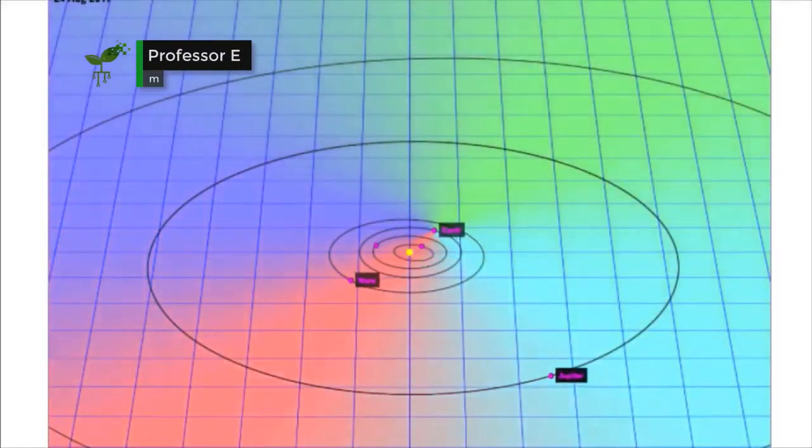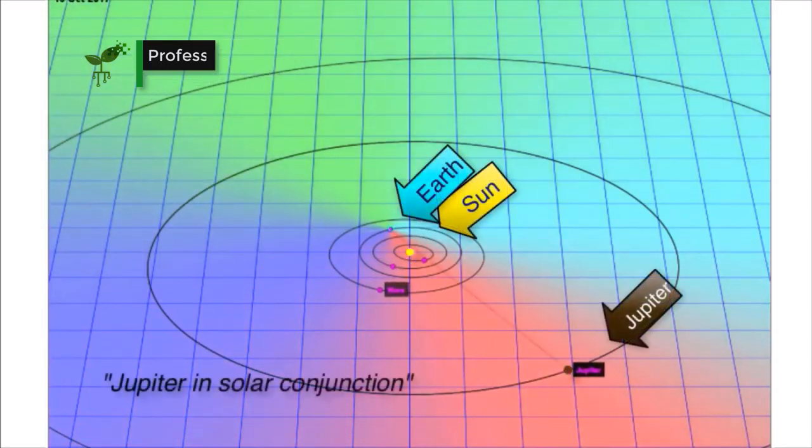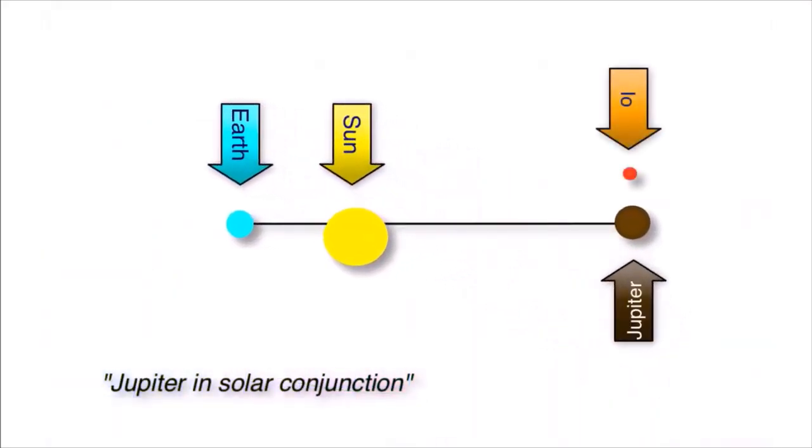Later in the 1670s, astronomers made measurements of Jupiter's moons when the Sun was nearly between Earth and Jupiter, or when Jupiter is nearly in conjunction, that is a little more than six months later in the year.